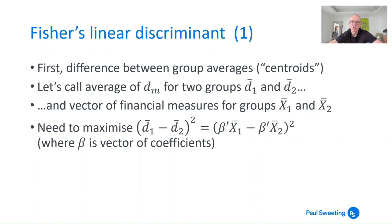There are a few different types of discriminant analysis, but the classic one is Fisher's Linear Discriminant. This first looks at the difference between the group averages, which he calls centroids. Let's call the average of D_m for the two groups D-bar one and D-bar two, and the vector of financial measures for groups one and two as x-bar one and x-bar two. This is the average across each financial measure within each group — for example, EBIT over assets averaged over all firms in group one would be the first item in this vector.